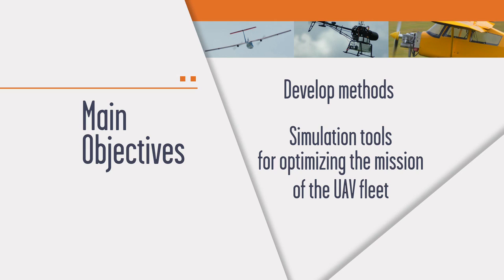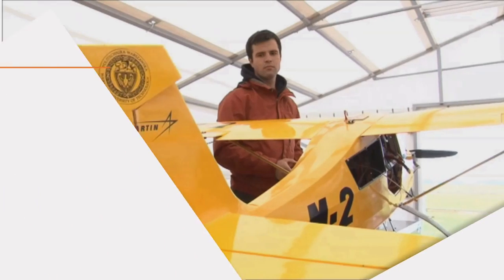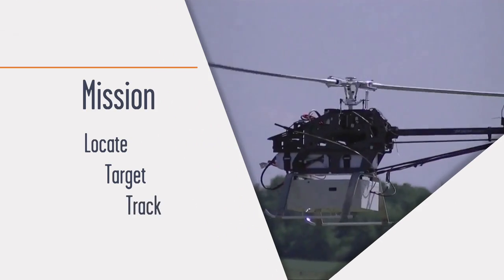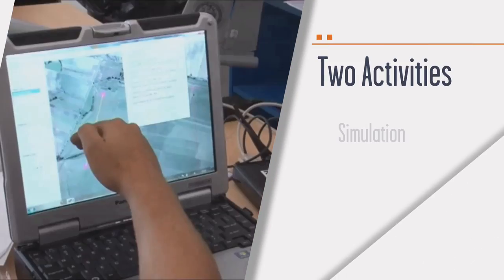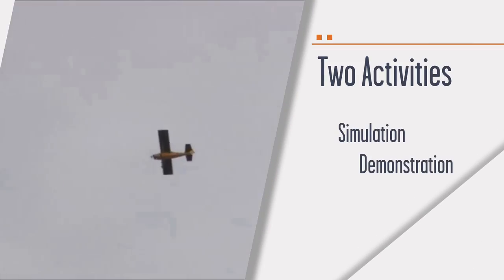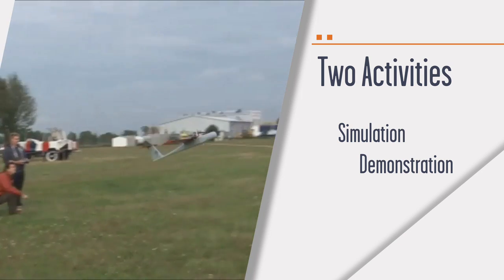The main objective of the OPUS project was to develop a method and simulation tool for optimizing the mission of a UAV fleet. The fleet was composed of different assets and the mission was to locate, target, and track. The project has two kinds of activities: simulation and demonstration of applicability of simulation results in flight. The research team was composed of two groups — one responsible for simulation and the other for demonstration.